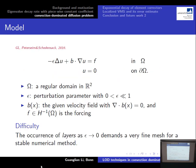Now comes the third part of my presentation: the convection dominated diffusion problem. This part is based on joint work with Daniel and Mira. Here is the model on a regular domain in R^2, where epsilon is the perturbation parameter and we are interested in the case where epsilon tends to zero. B is the divergence-free velocity field, and f is the forcing term in H^{-1}. The difficulty of this problem is the occurrence of layers when epsilon tends to zero, requiring a very fine mesh to get an accurate numerical solution.